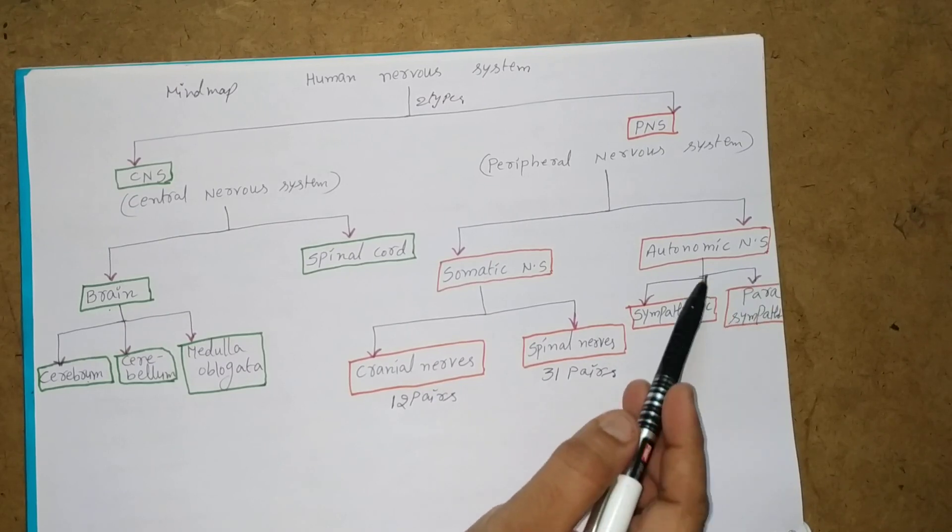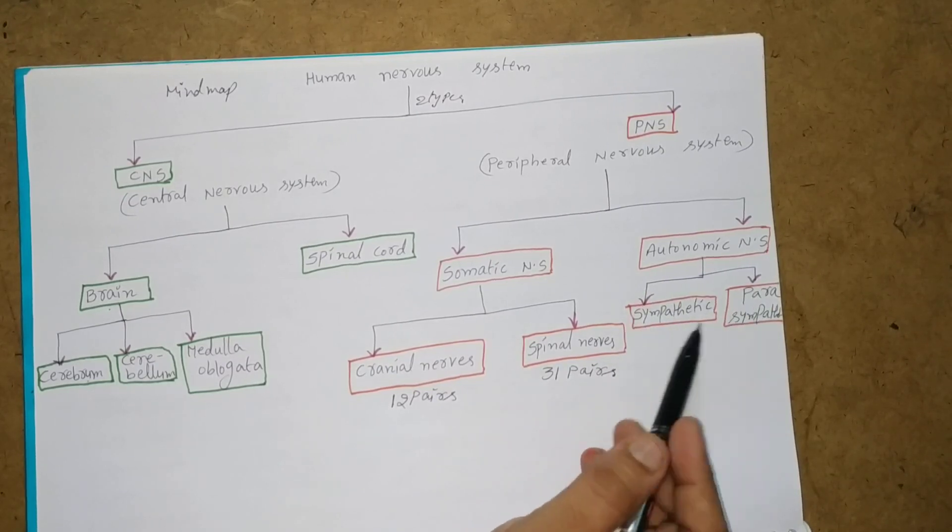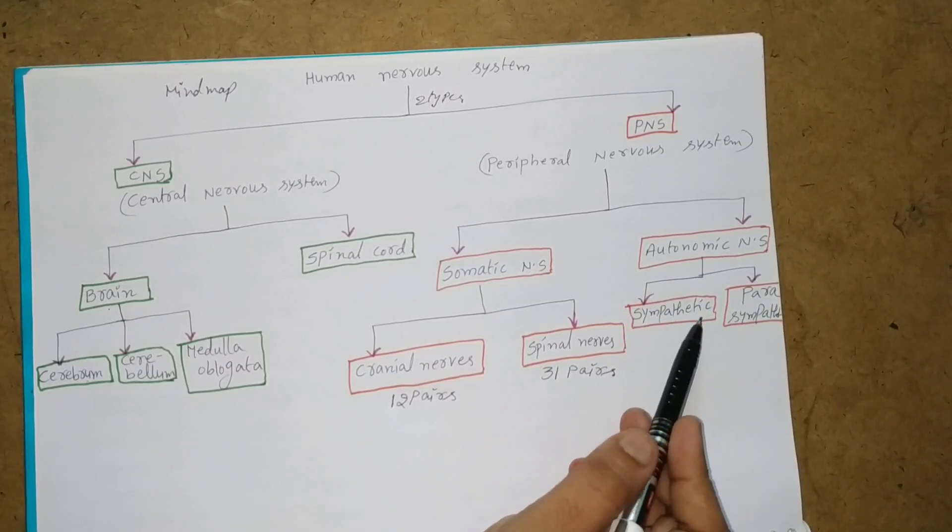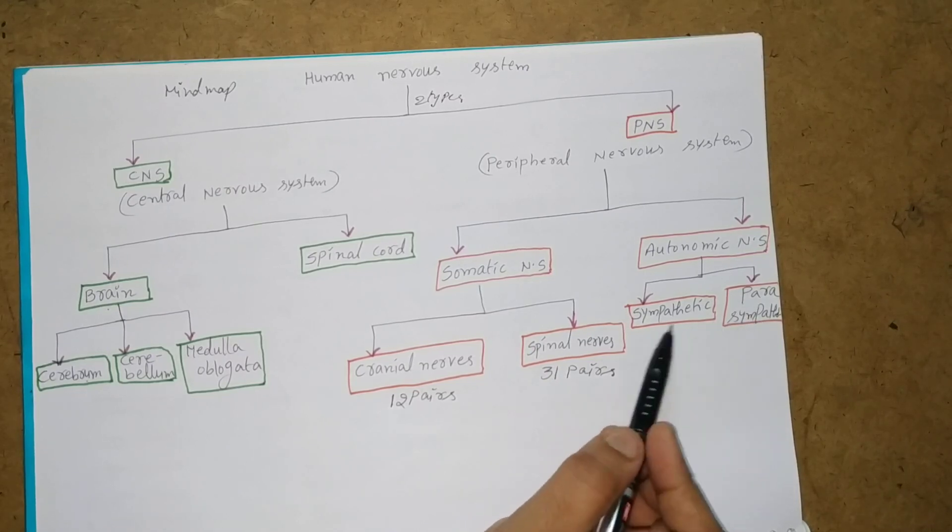Autonomic Nervous System is divided into two types: Sympathetic Nervous System and Parasympathetic Nervous System.